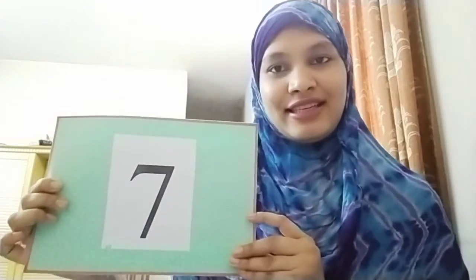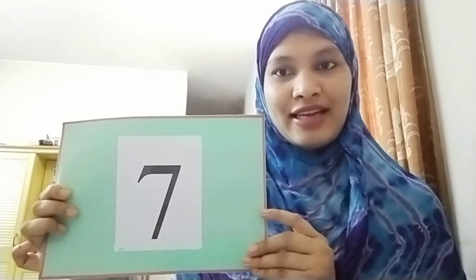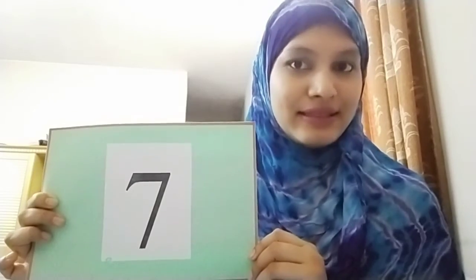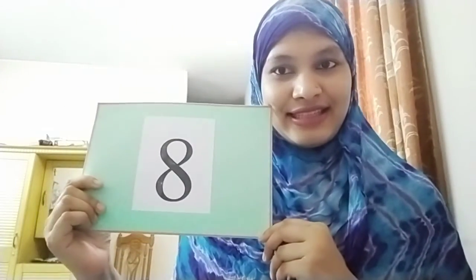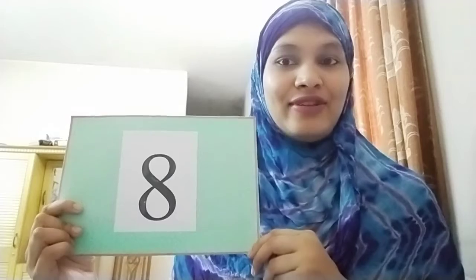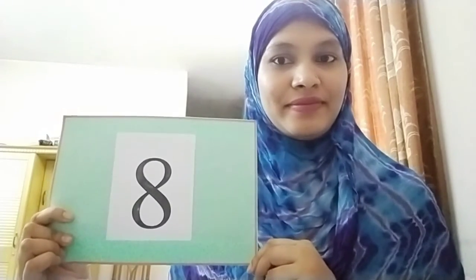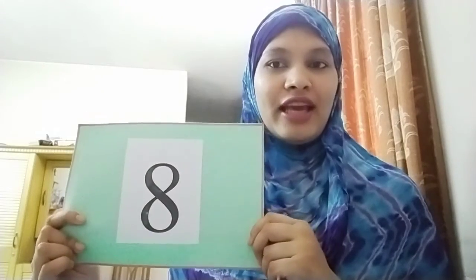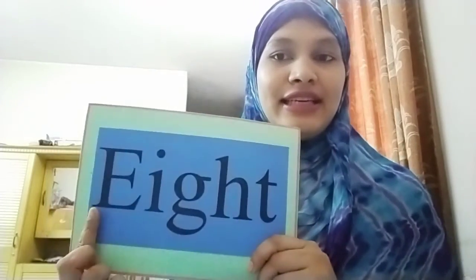Next one is seven. What is the spelling? Very good. S-E-V-E-N, seven. Say it again. S-E-V-E-N, seven. Very good. What number is this? This is eight. Now, can you say the spelling? E-I-G-H-T, right? E-I-G-H-T, eight. Again. E-I-G-H-T, eight. Very good.